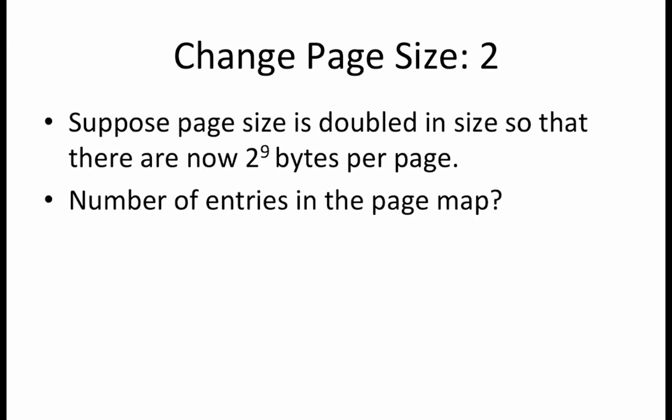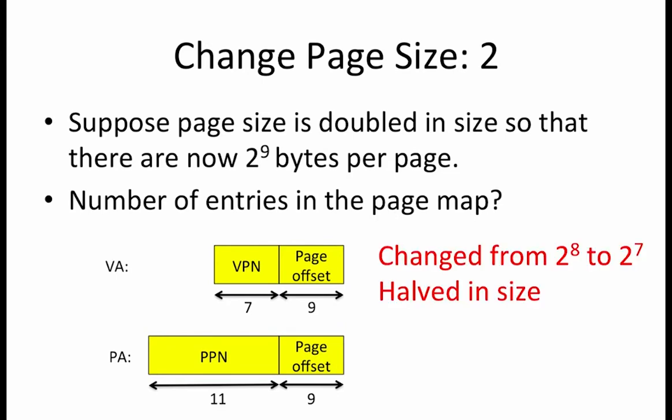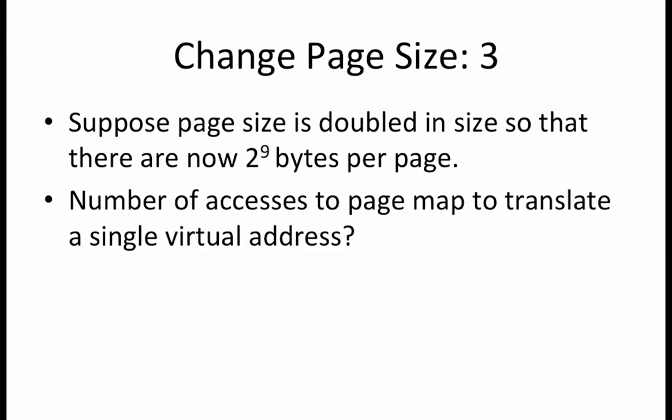How are the number of entries in the page map affected by the change in page size? Since the number of entries in a page map is equal to the number of virtual pages, if the size of each page doubled, then we have half as many virtual pages. This is shown in the size of the VPN, which has decreased from 8 to 7 bits. This also means that the number of entries in the page map have halved from 2 to the 8 entries down to 2 to the 7 entries. The number of accesses to the page map required to translate a single virtual address does not change as a result of the pages doubling in size.